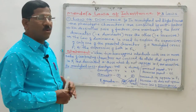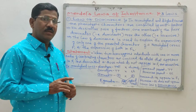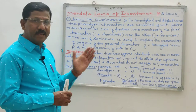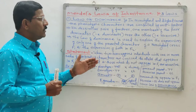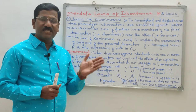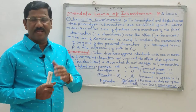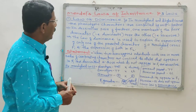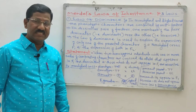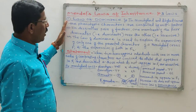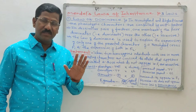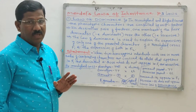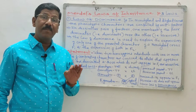According to Mendel, he proposed three basic laws that occur during inheritance pattern — that means during genetic character transfer from parent to their offspring. According to Mendel, there are three basic laws: number one is the law of dominance, second one is the law of segregation or law of purity of gametes, and third one is the law of independent assortment.